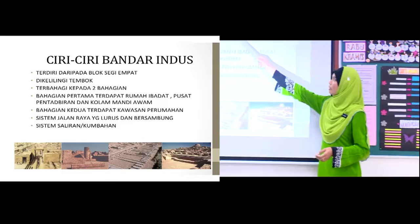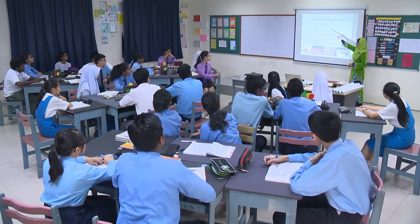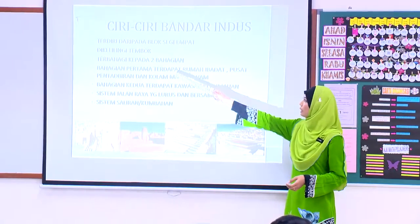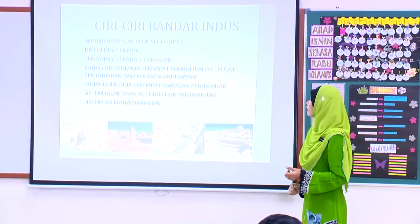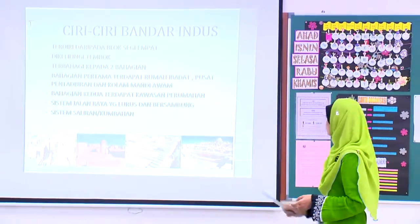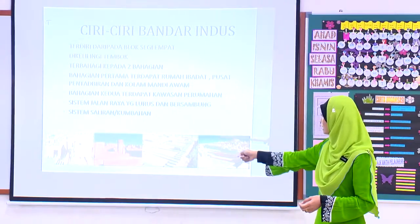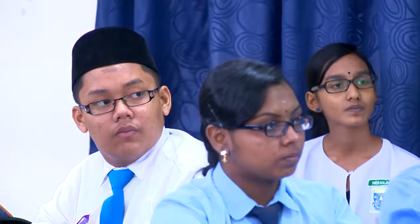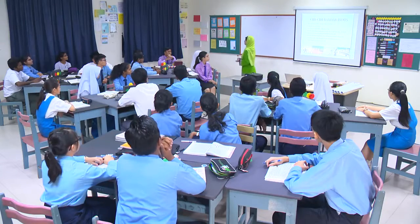Ini antara ciri-ciri bandar Indus yang perlu kamu tahu. Yang pertama, bandarnya terdiri daripada blok segi empat, dikelilingi tembok, dan terbahagi kepada dua bahagian. Bahagian pertama terdapat rumah ibadat dan pusat pentadbiran. Bahagian kedua terdapat kawasan perumahan. Bandarnya juga dilengkapi dengan sistem jalan raya yang lurus dan bersambung. Di kawasan perumahannya terdapat sistem saliran atau dikenali juga sebagai sistem kumbahan. Jadi hari ini, Cikgu akan kongsikan kepada kamu semua bagaimana kita dapat mengingat ciri-ciri bandar Indus melalui teknik lakaran mudah.